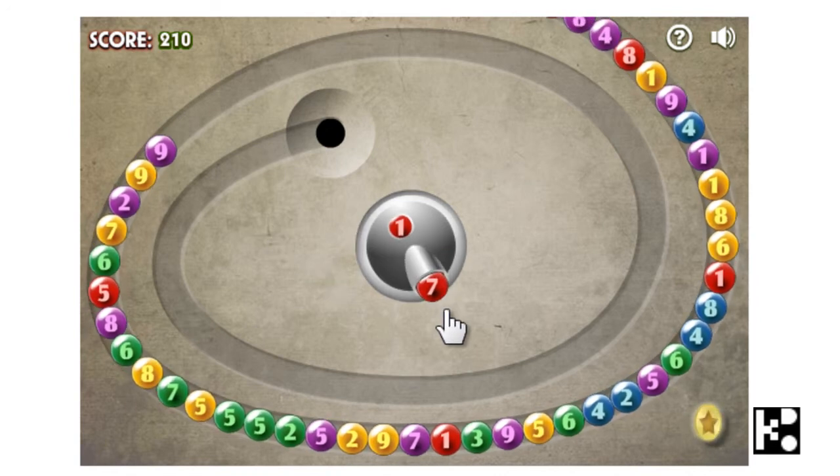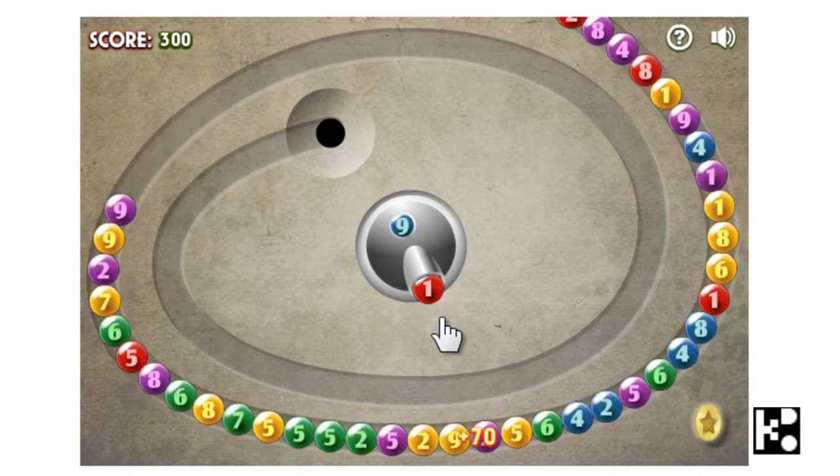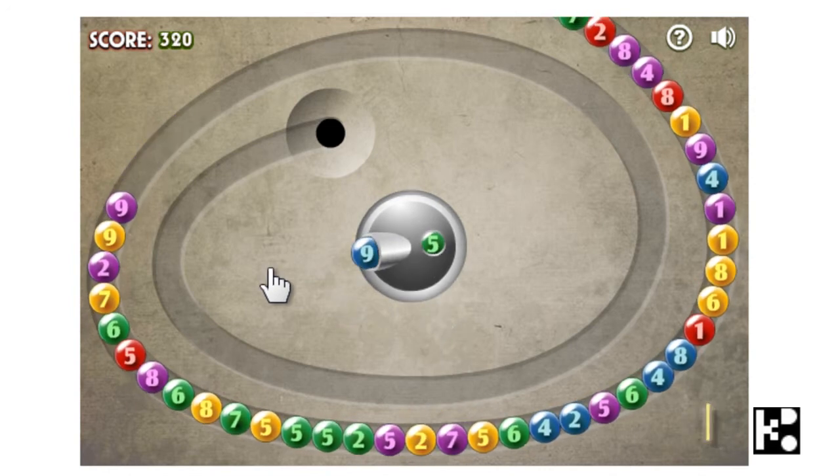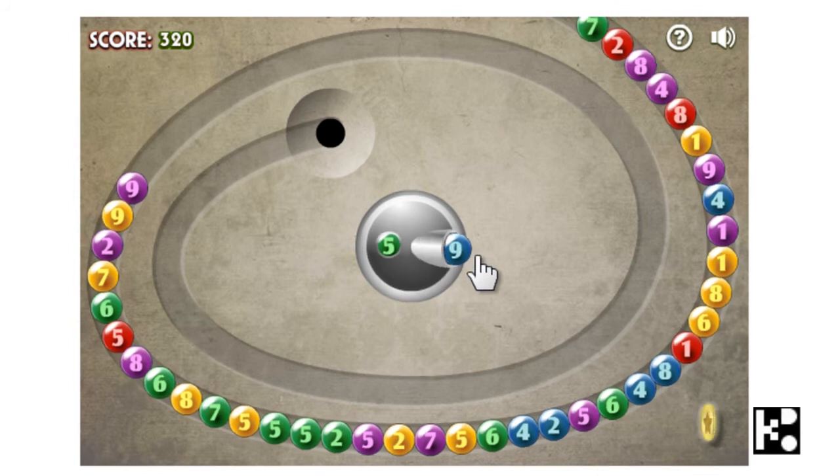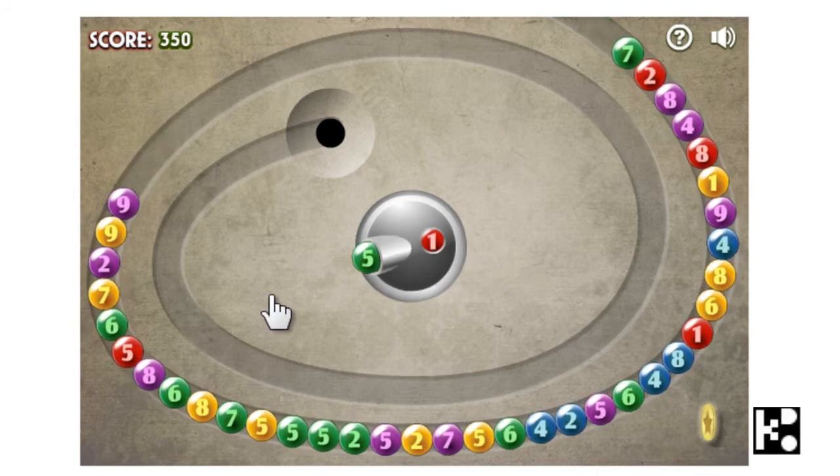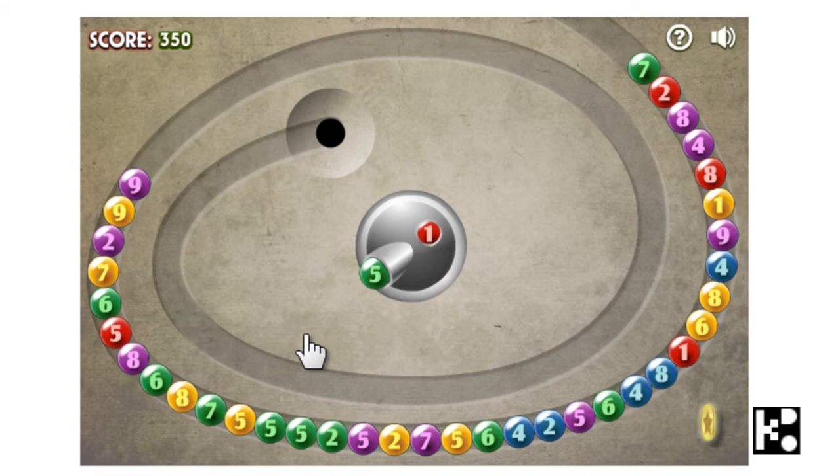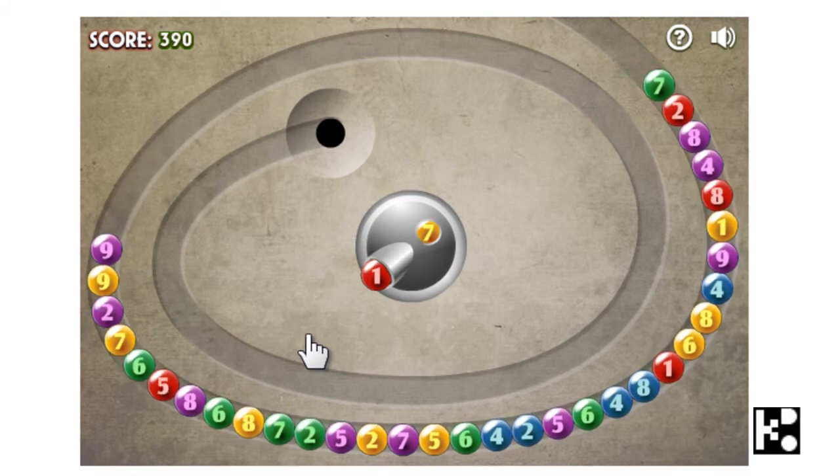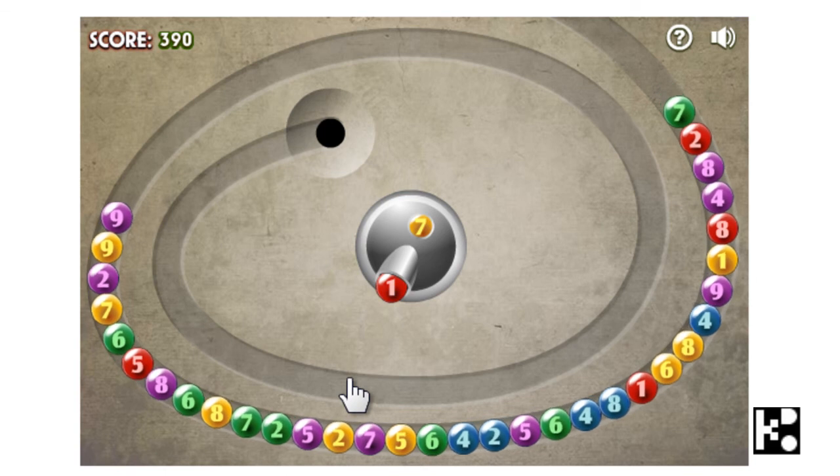So 7 plus 3. I got 1 plus 9. Yes, I got 9, 2, 1. That's 2 and 1 together. And 5 plus 5. It's 3 and 5 together. You see? How smart I did.